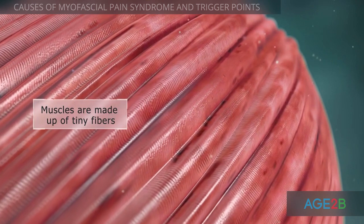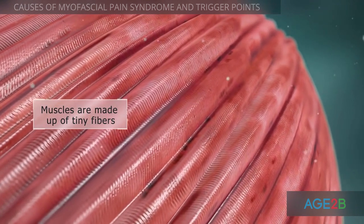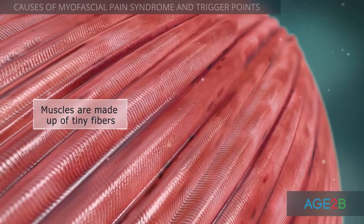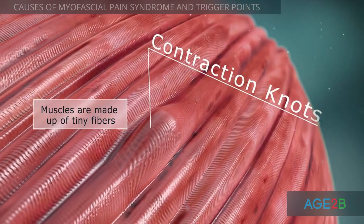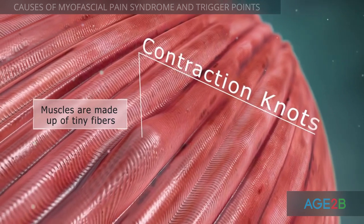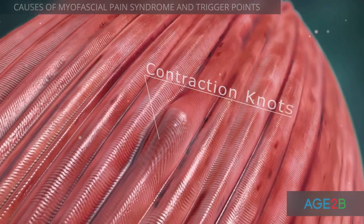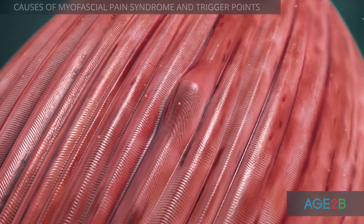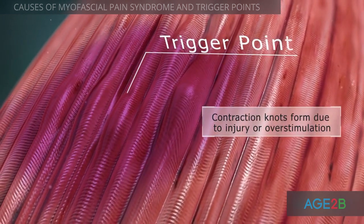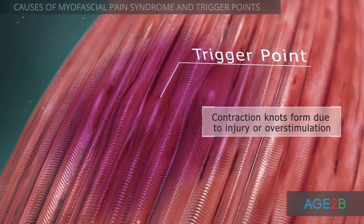A muscle is composed of tiny fibers which contract and relax in response to messages from the brain. When muscle fibers become injured or overstimulated, they cannot relax and form contraction knots. A trigger point consists of many contraction knots where individual muscle fibers contract and cannot relax.